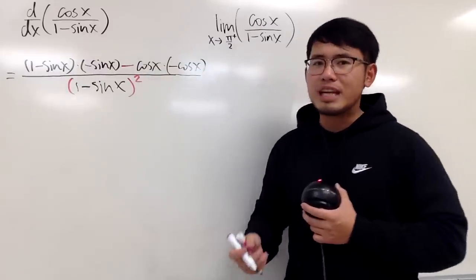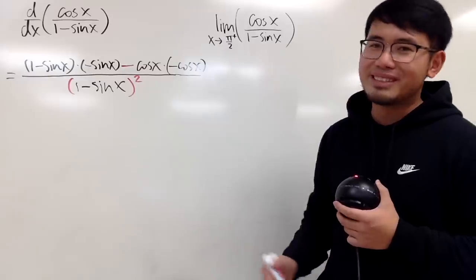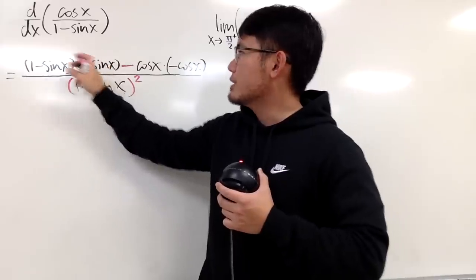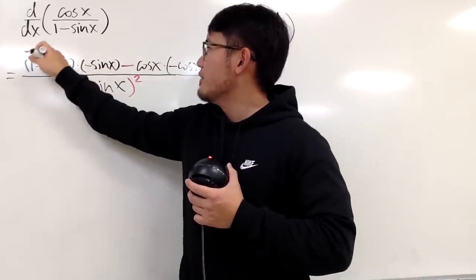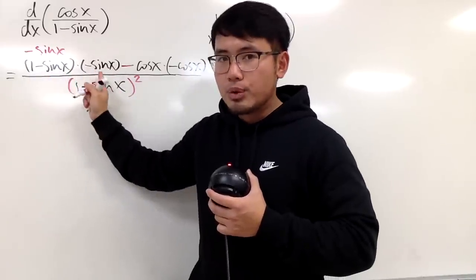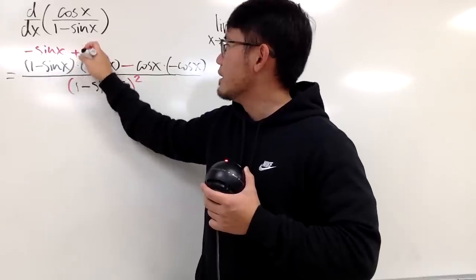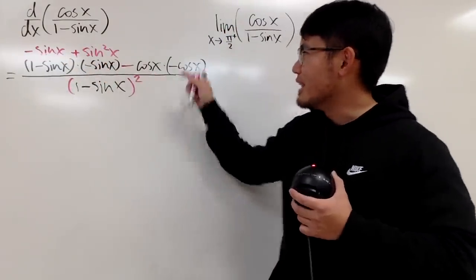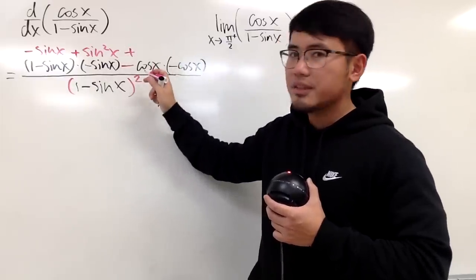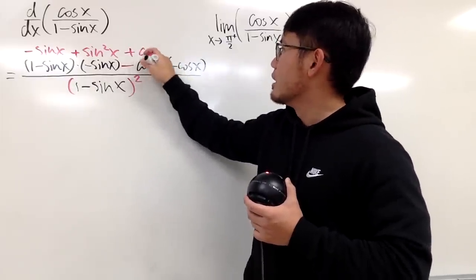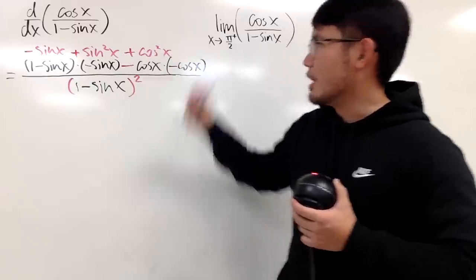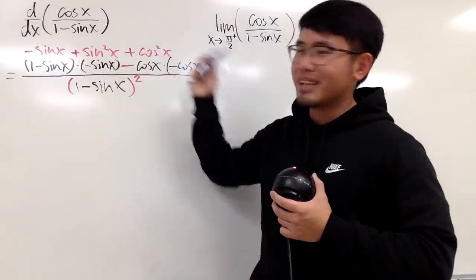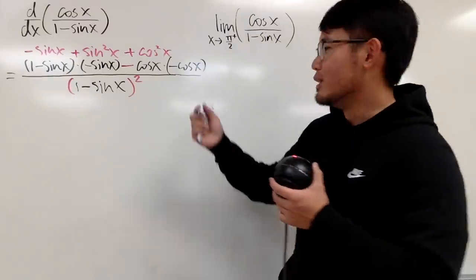And this is pretty much it for the calculus step. The rest is just doing the work to simplify this expression a little bit. When you do this multiplication, we get negative sine x, and then we get a positive sine squared x. And then when you multiply cosine x times cosine x, we have cosine squared x right there. Notice here we have sine squared x plus cosine squared x, and this right here is of course the famous trig identity.